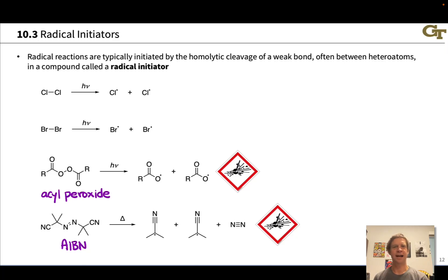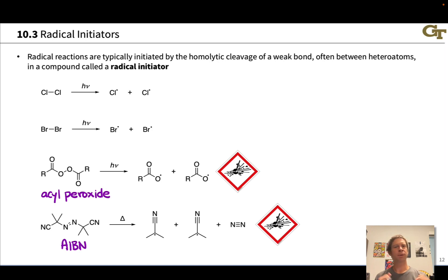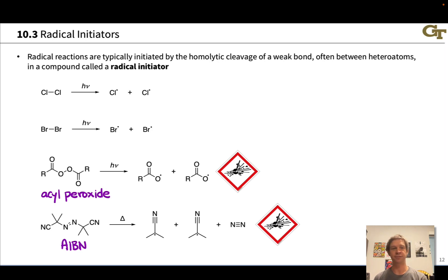The vast majority of radical reactions require the generation of a radical in the initiation stage from a species with a weak bond. That weak bond can break homolytically relatively easily, often under the influence of ultraviolet light, visible light, or heat.